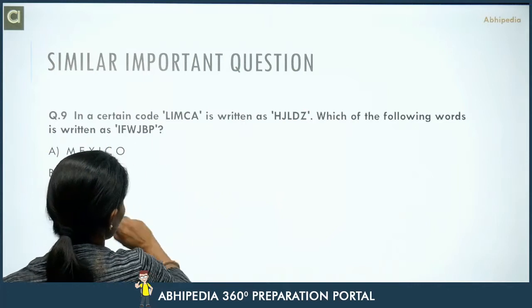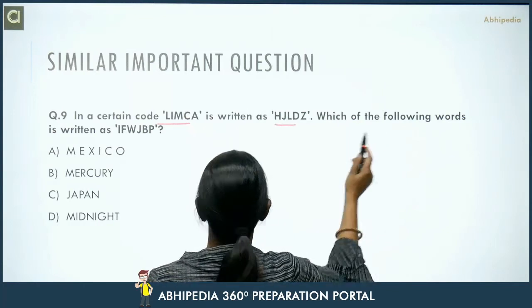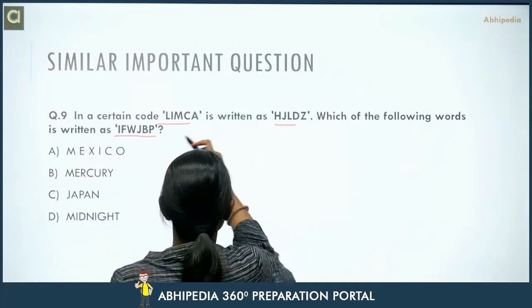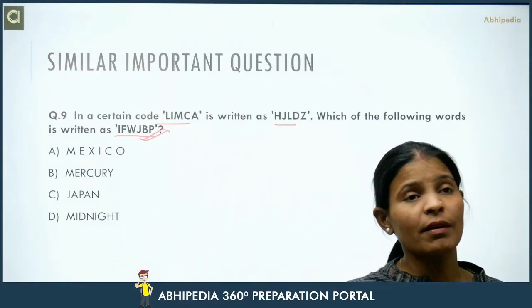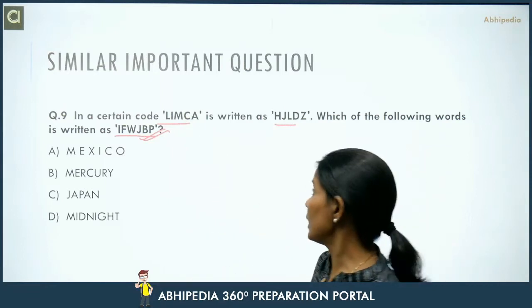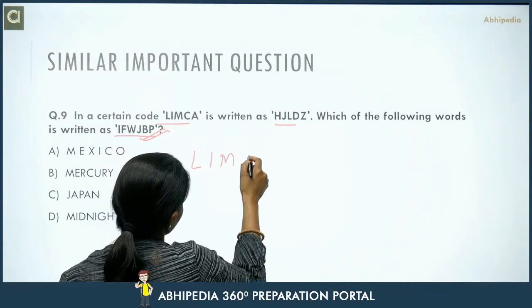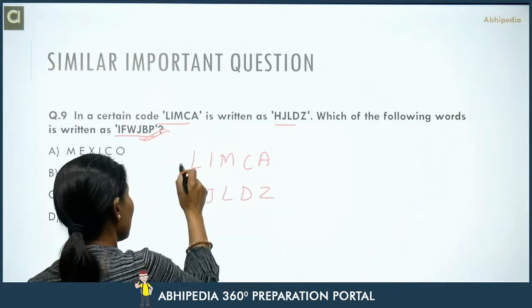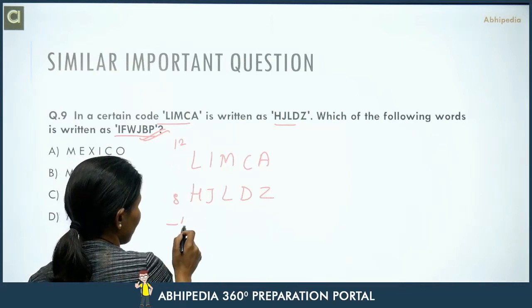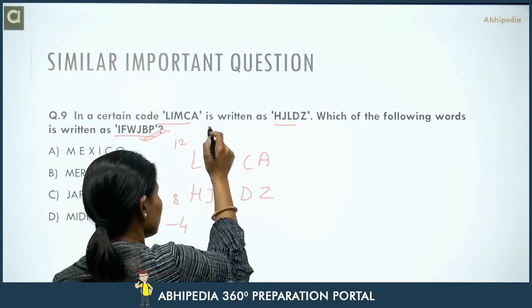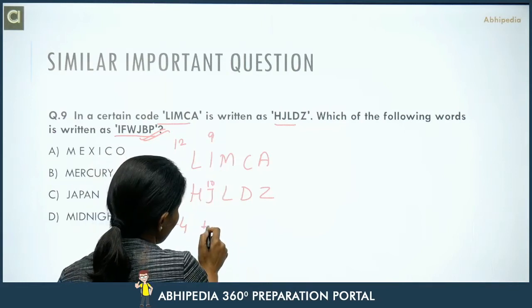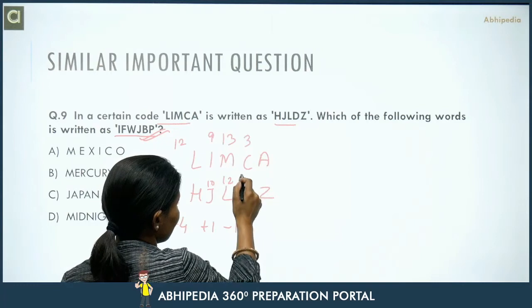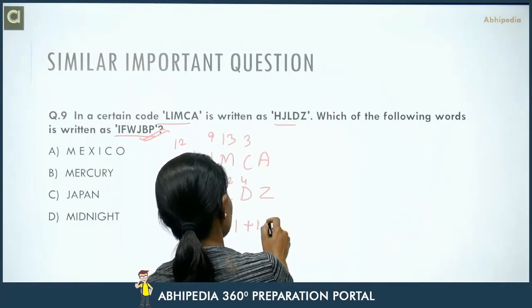Next question: in a certain code, LIMKA is written as H-J-L-D-Z. Which word is written as I-F-W-J-B-P? Looking at LIMKA: L is at 12th position, H is at 8th — minus 4. I is at 9th, J is at 10th — plus 1. M is at 13th, L is at 12th — minus 1. C is at 3rd, D is at 4th — plus 1. A to Z — minus 1. So the pattern is: first letter minus 4, then alternating plus 1, minus 1.